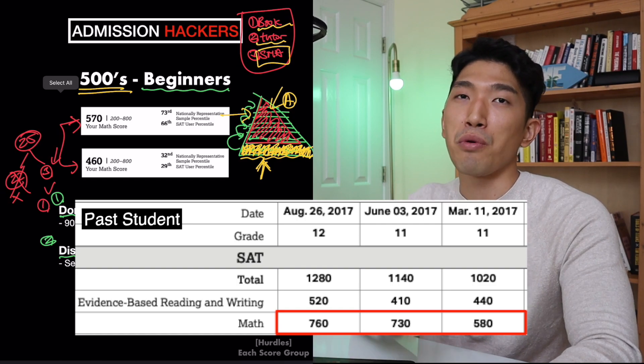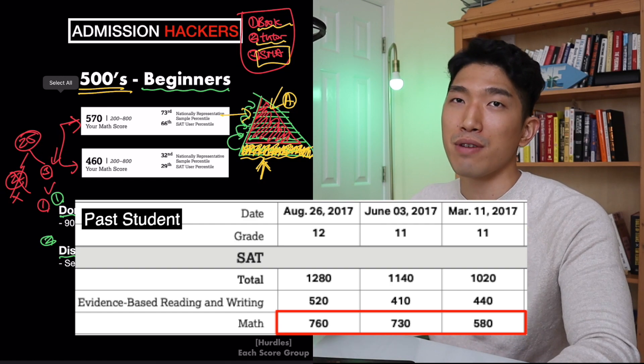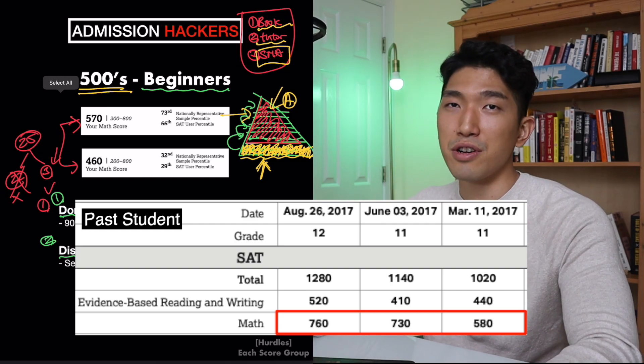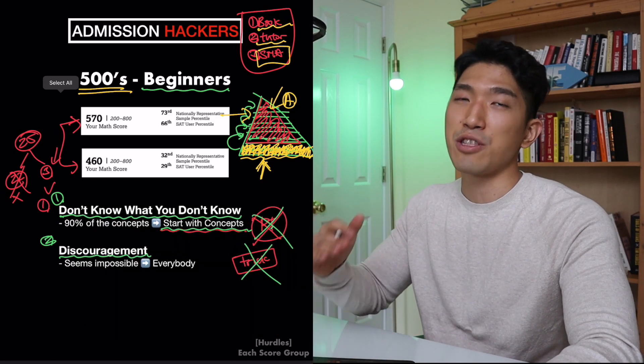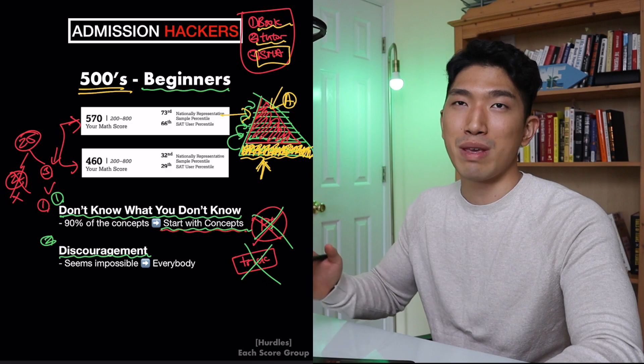The point here is that everybody starts somewhere. And even if you are starting with a low score, it is possible for you to break the 700, 750, and even get to a perfect score of 800. Don't get discouraged. Don't get disappointed. Keep putting in the work. And as long as you don't give up, you're going to get to your target score. I can promise you that. So that's going to be for the beginners.